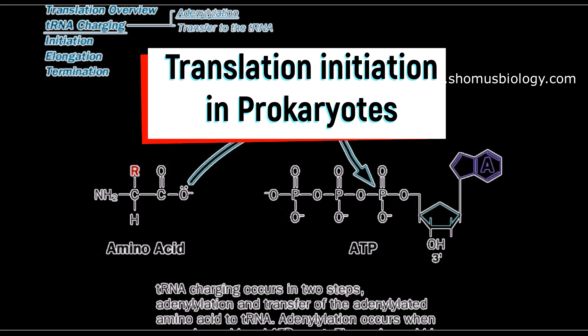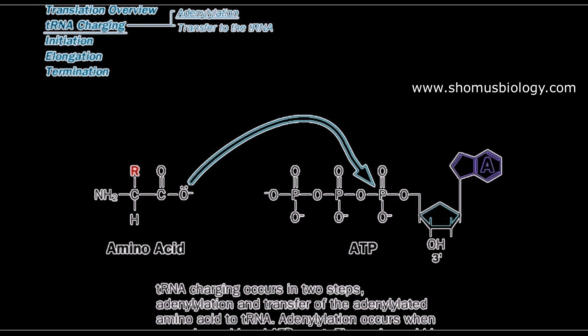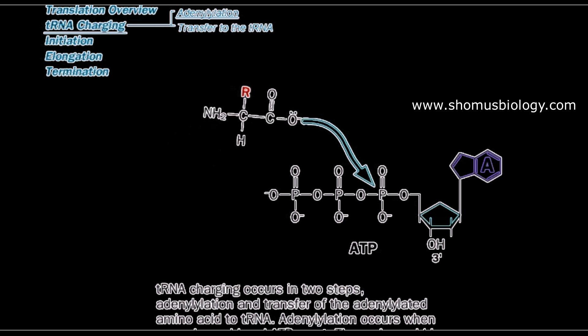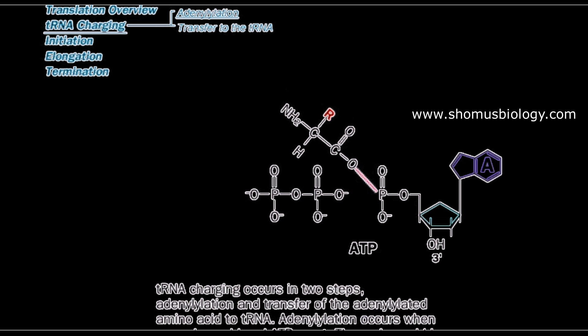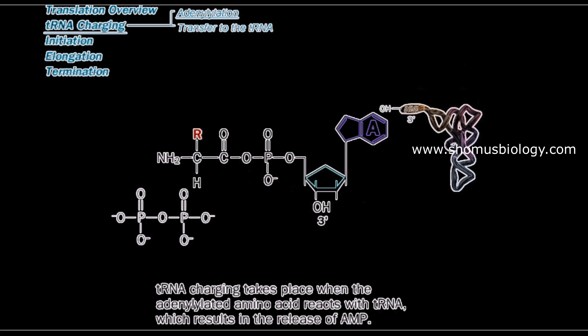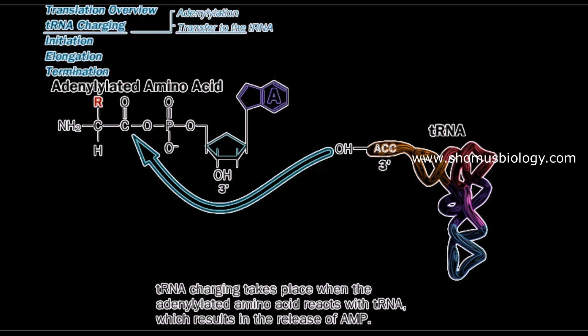The very first step of tRNA charging is where the amino acid is transferred to AMP. Basically, ATP and amino acid are in place, and there is formation of a bond known as the adenylation of the amino acid to the tRNA. So first is the adenylation—the amino acid is adenylated.